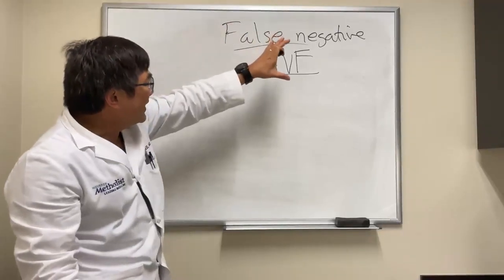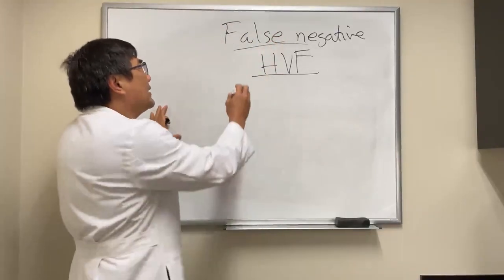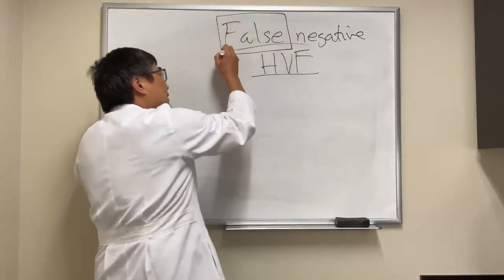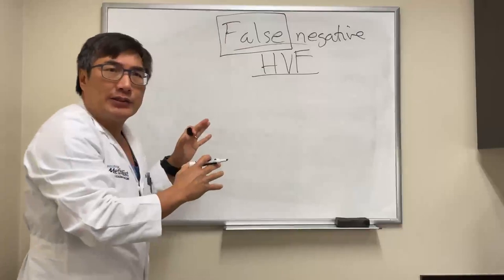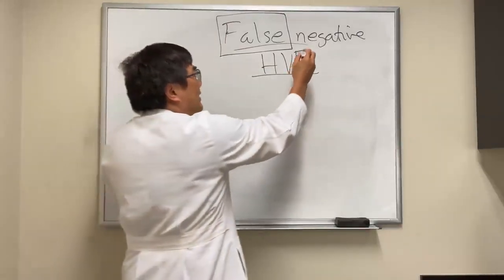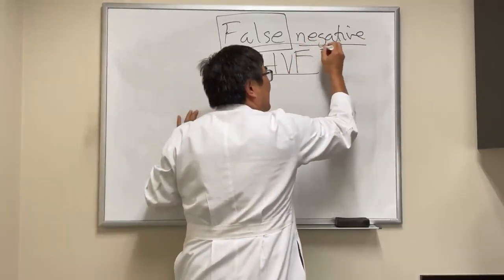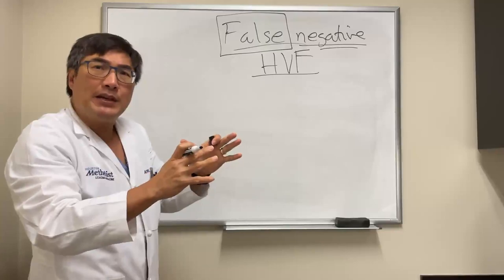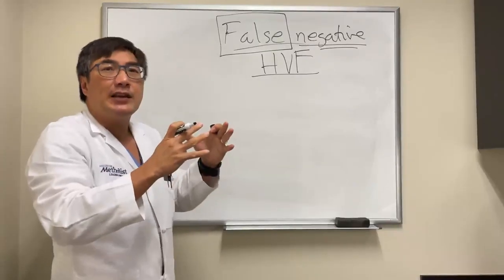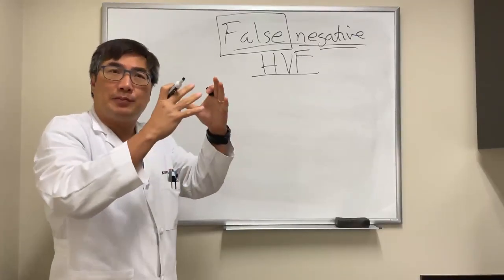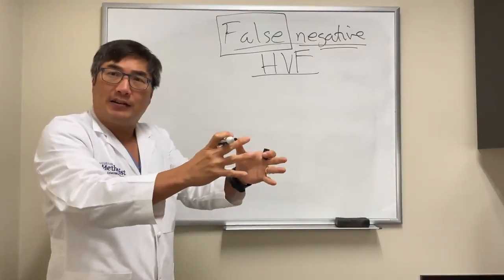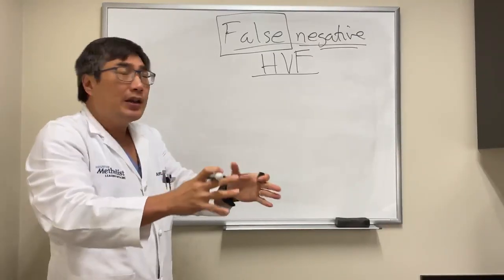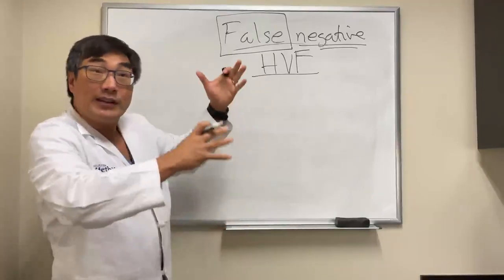A false negative means the result is false — it's not a real result. In perimetry, that means it's giving the impression that there's a black spot, a scotoma, where you don't see, where there isn't one.